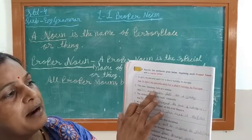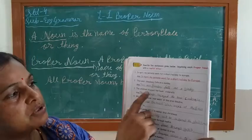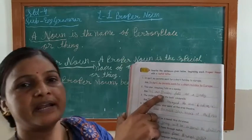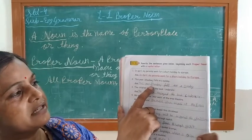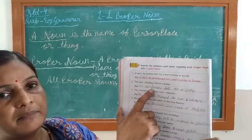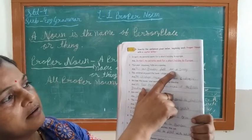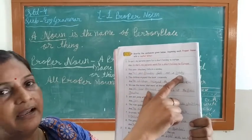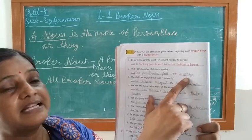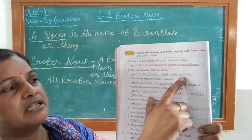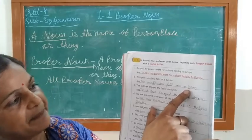This year, Bhav Beach falls on Sunday. 'Bhav Beach' is the proper name of a festival, so B is capital. 'Sunday' is a special name given to a day, so S is capital. We write S capital.